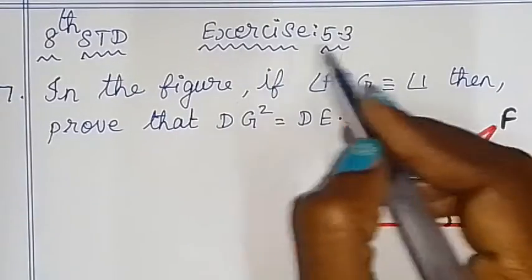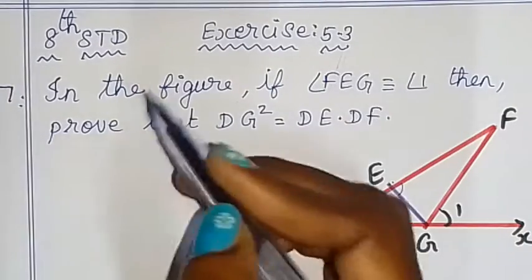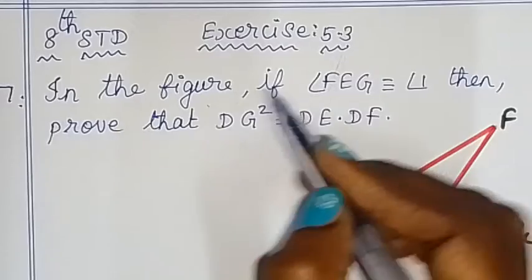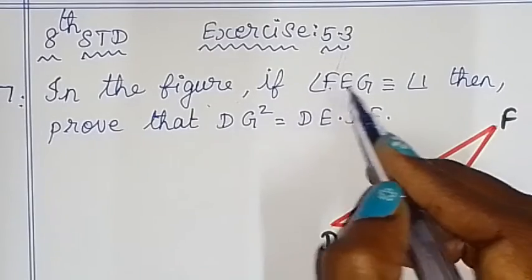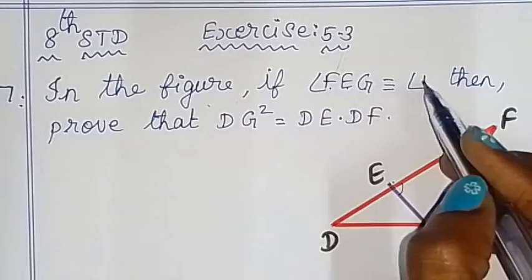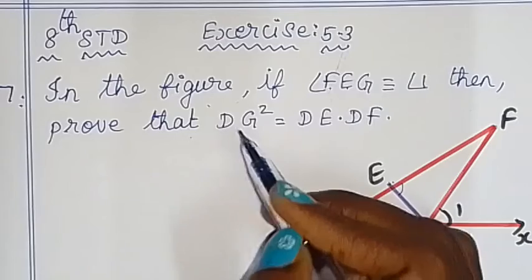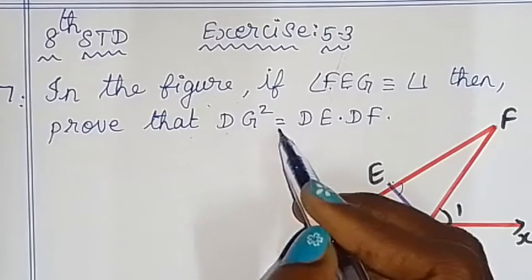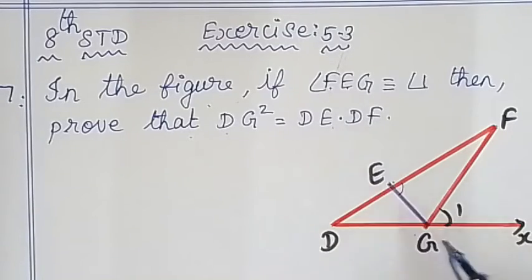Hello children. In exercise 5.3, question number 7: in this figure, if angle FEG is congruent to angle 1, then prove that DG squared is equal to DE into DF.